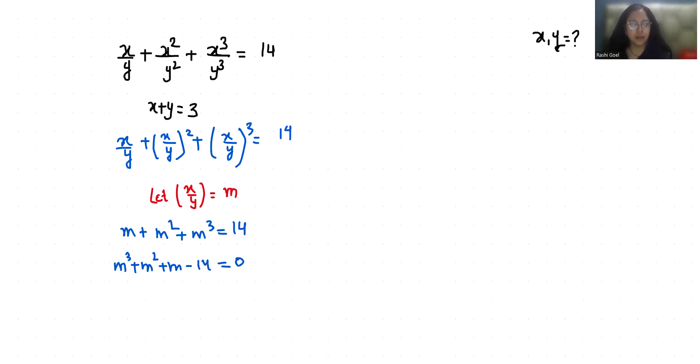Now m cube I can write as minus 2m square plus 3m square, and plus m I can write as minus 6m plus 7m minus 14 equals 0.